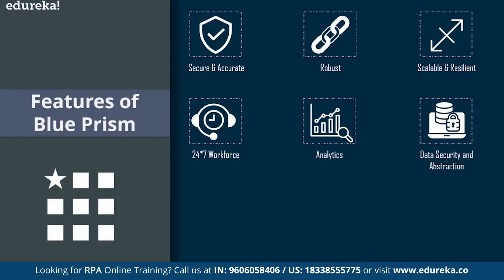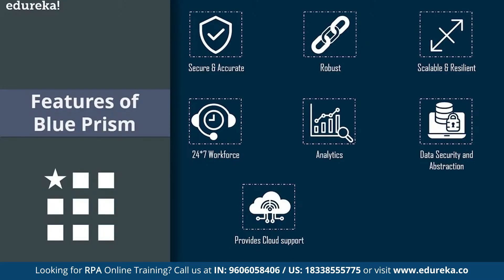Moving on to data security and abstraction — since the tool is designed to work autonomously, 24x7, all processes are performed and stored in the data center. This provides well-defined data abstraction and process security. You don't have to worry about data security; Blue Prism ensures data is abstracted and only given to users who have access to that particular data. Moving on to cloud support: Blue Prism provides working capacity support as per the business requirement. It's not necessary to have the complete tool and storage upfront — it's completely based on business-to-business requirements, with small enterprises needing less storage and large enterprises needing more.